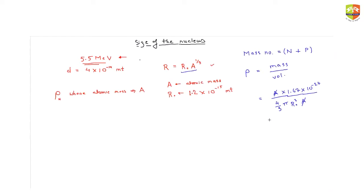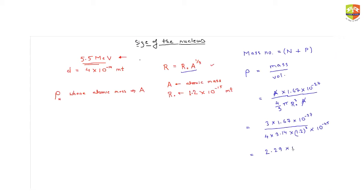Something amazing has happened here: the density does not depend on the mass number. So the density of the nucleus is independent of mass number — it doesn't matter which atom you are talking about, the density of the nucleus is fixed. The actual answer works out to approximately 2.29 × 10¹⁷ kg/m³. It's a tremendous value.